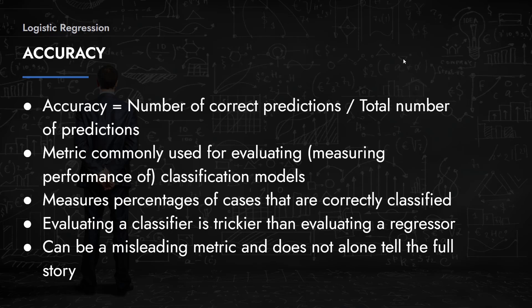You might have high accuracy but the model might not be the best — or even a good model — for your problem. Accuracy is just one measurement, and there are other measurements that technically measure other performance aspects of a model. Accuracy basically measures the number of correct predictions over the total number of predictions — it measures the percentage of cases correctly classified.